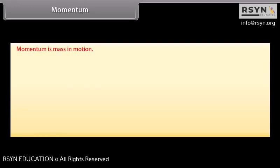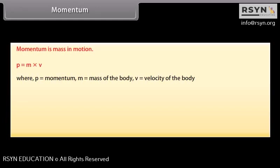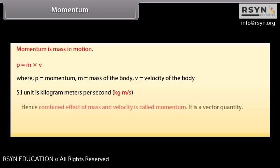Momentum. Momentum is mass in motion. P = M × V, where P is momentum, M is mass of the body, and V is velocity of the body. SI unit is kilogram meters per second. Hence combined effect of mass and velocity is called momentum. It is a vector quantity.